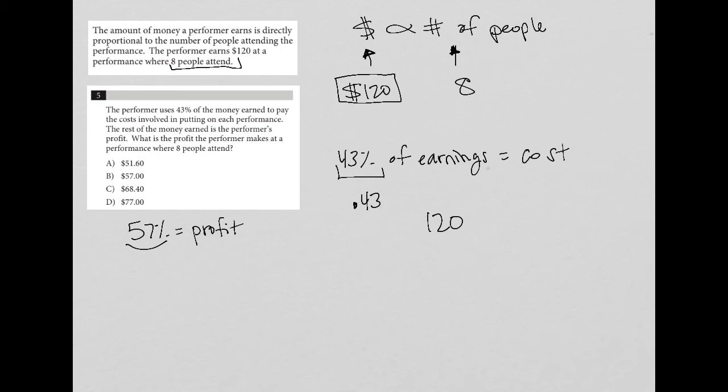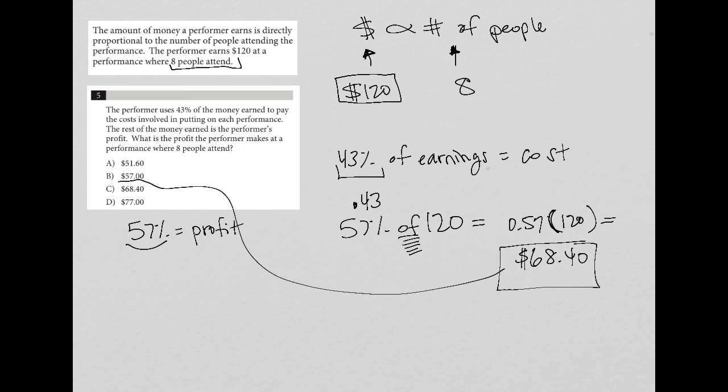I want to basically figure out what is 57% of 120. The way that I do that is I convert my percentage into a decimal, so 0.57. The word of always means to multiply. So 0.57, I'll put parentheses, 120. So 0.57 times 120. Because this is the calculator section, I just go straight to my calculator. Type in 0.57 times 120. And what I get out is that that is $68.40, which is what the performer earns and is therefore answer choice C.